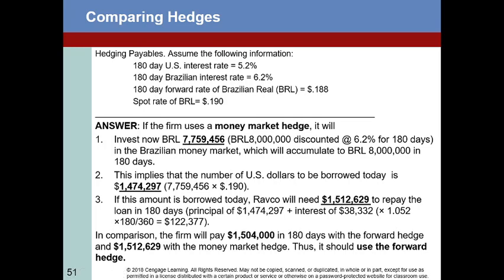That means we're going to have to borrow today $1,474,297. We then convert those dollars to 7,759,456 reals and invest them so that in 180 days we end up with exactly the 8 million we need — no more, no less. If this amount is borrowed today, RAVCO will need $1,512,629 to repay that loan in 180 days. That's the principal of $1,474,297 plus interest.